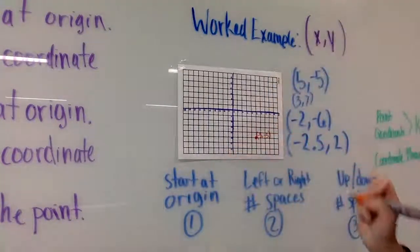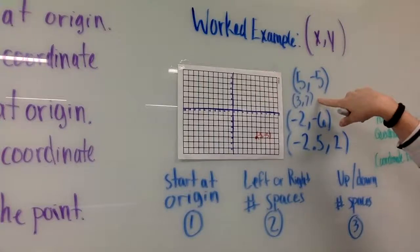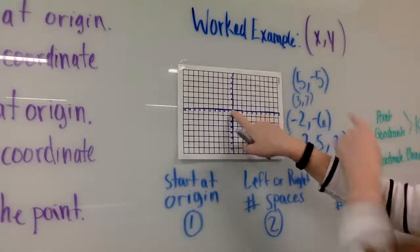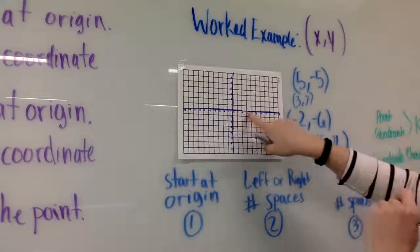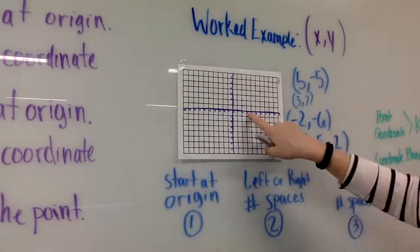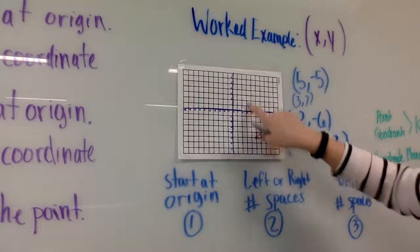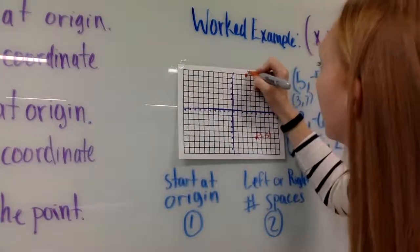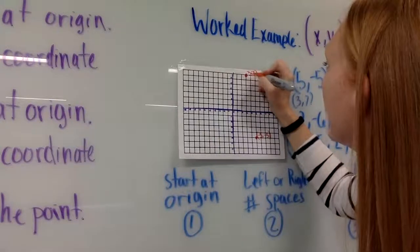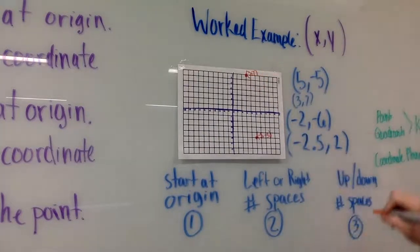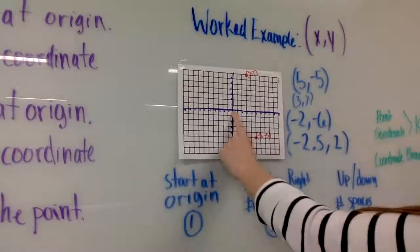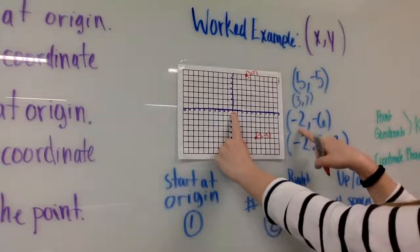Our next ordered pair is (3, 7) — both positive numbers. Starting at the origin, the x coordinate is positive so I go to the right three. The y coordinate is positive so I go up seven. I'll label that (3, 7).